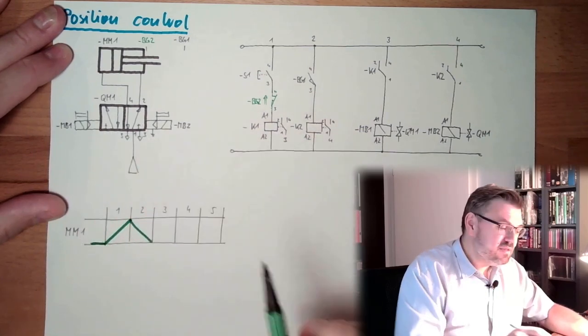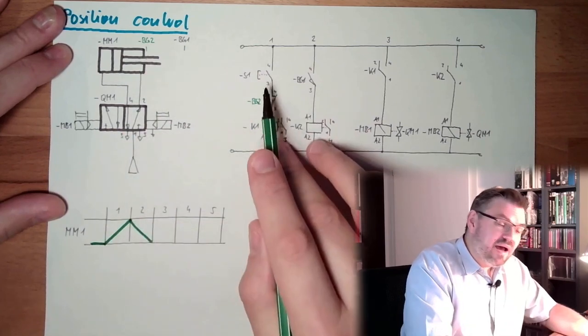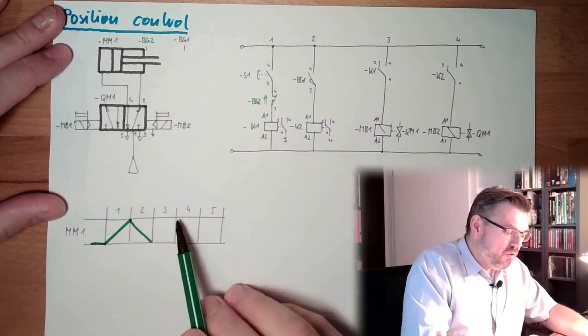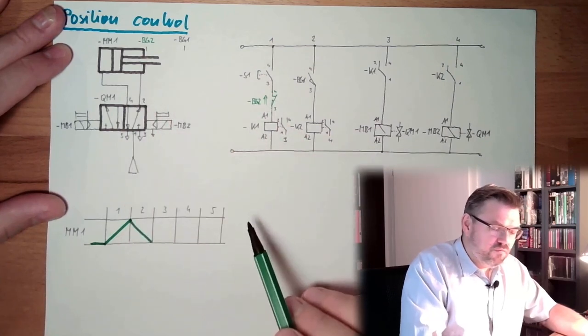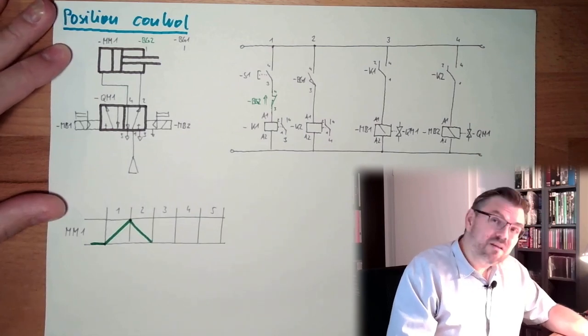And in worst case, if BG2... Well, worst case, I don't know. But in case I do not release the button, BG2 is then operated. And we will go immediately out again and go in and out. But we have no signal overlapping. Alright?